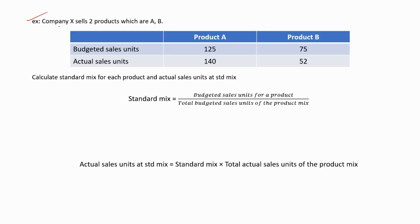Company X sells two products: product A and product B, which means company X has a product mix. They have given us the budgeted sales units and actual sales units for each product. We have to calculate the standard mix for each product and the actual sales units at standard mix for each product separately.